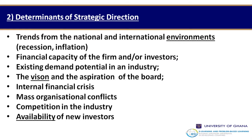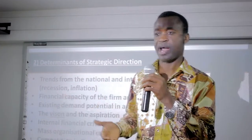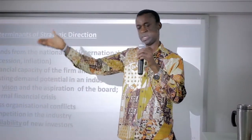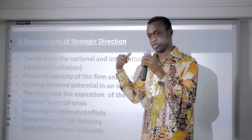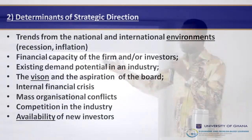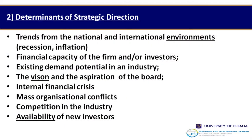Number one is trends from the national and international environment. For example, mining companies are struggling because of gold prices, which is why organizations like AGC are doing retrenchment — it is a result of an event coming from the global environment. Number two is financial capacity: if the firm is doing very well it needs to reconsider its direction. Number three is demand potential — if a firm has a direction based on demand-driven activity, it has a lot of benefit.